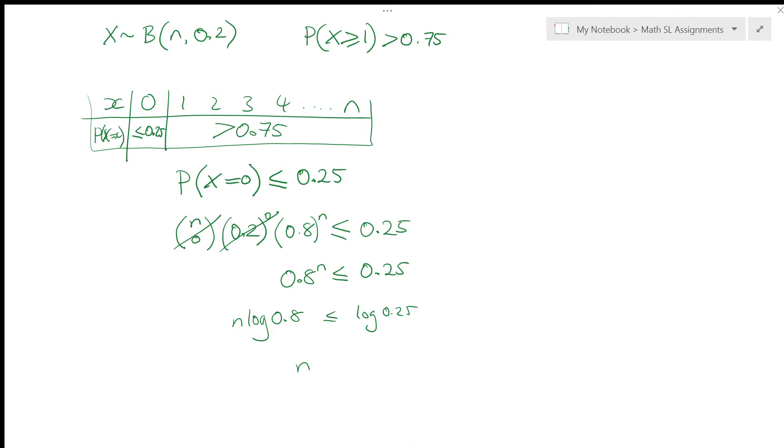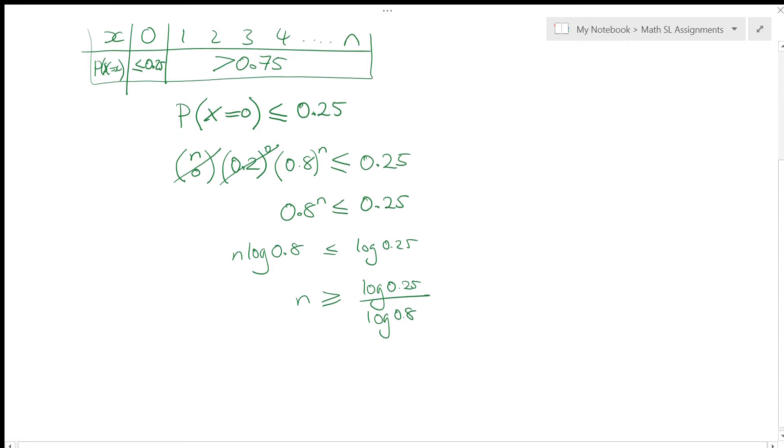Log of 0.8 is negative 0.096. So this is negative, so when I divide both sides by a negative, I need to switch the direction of my inequality. So this becomes log 0.25 divided by log of 0.8. But now I'm saying n has to be bigger than or equal to whatever I get here.